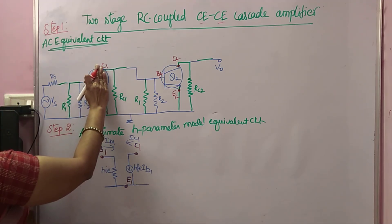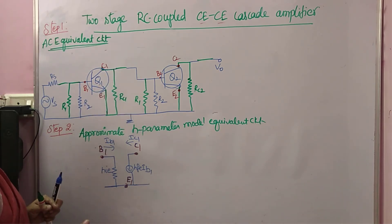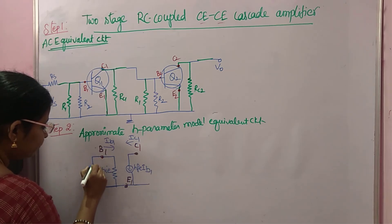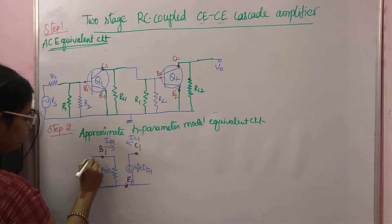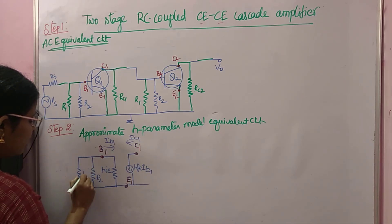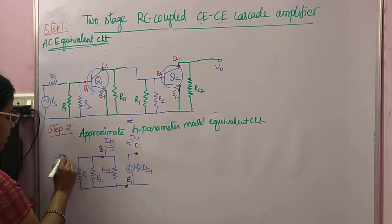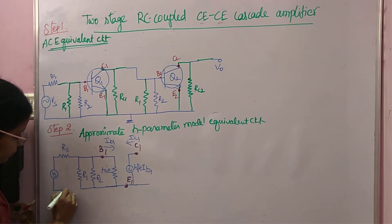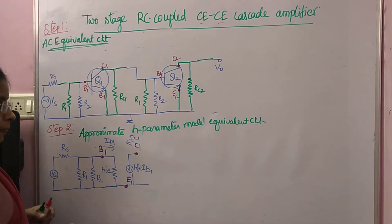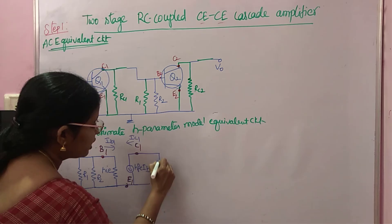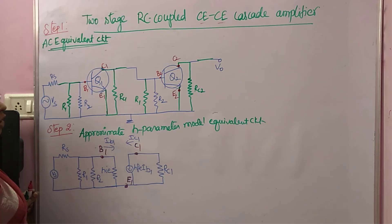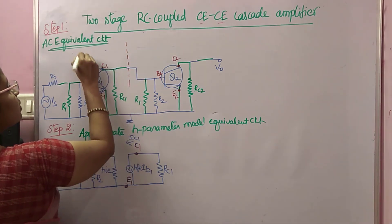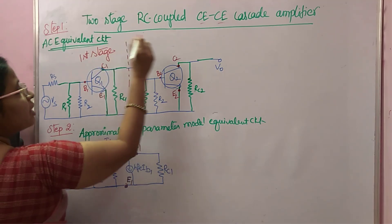Now to this transistor there exist many resistors — the extra circuit. You simply have to add that circuit as it is. At B1 you are seeing two resistors: R2 and R1. You also have RS and VS. At the collector side you have resistor RC1. From this onwards the second stage will start. So up to this is the first stage, and from here is the second stage.